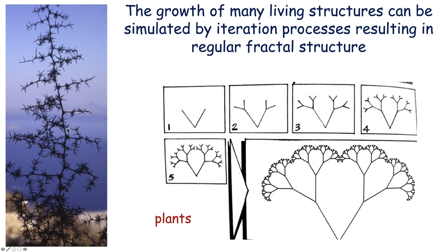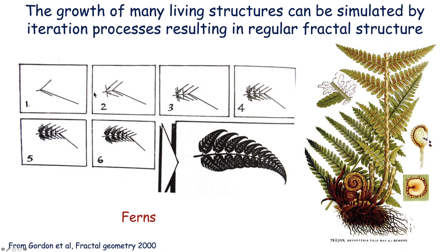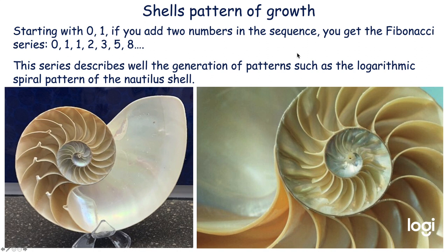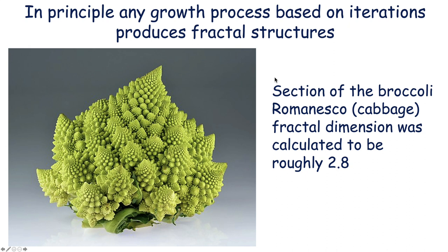Even living structures — like a picture taken near where I live — show growth of plants by simple doubling, doubling again, and again, becoming a complex plant. This applies to ferns, which grow in very much the same way. Many plants are due to the generation of repeated iteration processes resulting in regular fractal structures. Not all natural structures are regular, but they are still mostly fractal. An example of a regular structure: starting from 0 and 1, you add two numbers and the sequence you get by adding the two numbers next to each other gives the famous Fibonacci series — practically a thousand years old. This series describes well the generation of patterns such as the logarithmic spiral pattern in some shells — a wonderful expression of fractals in nature.